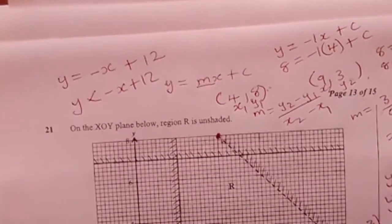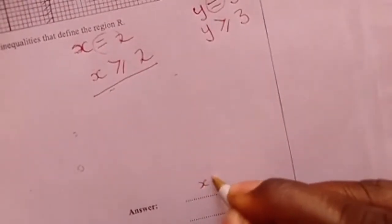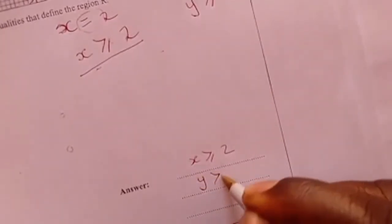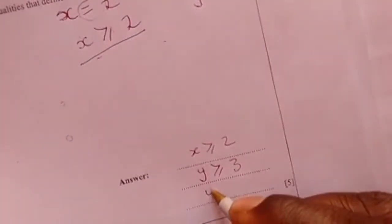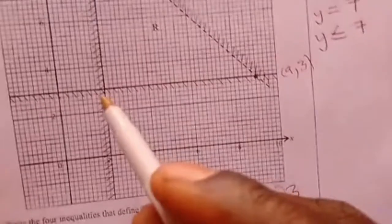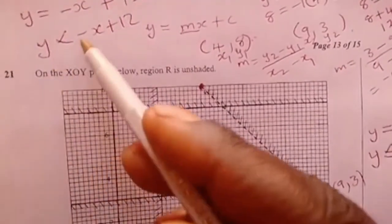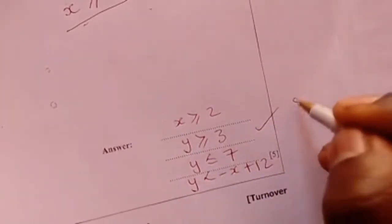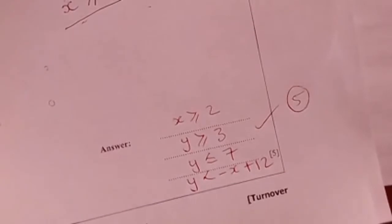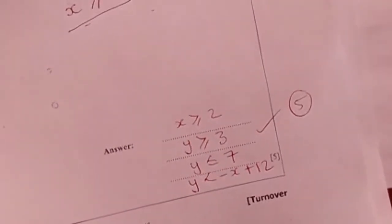So you are now writing your answers. The first solution is x greater than or equal to 2. The second solution is y greater than or equal to 3. The third solution is y less than or equal to 7. The fourth inequality is y less than minus x plus 12. This is how you present your answers. Stay tuned as we move on to the next question.